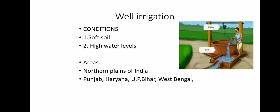Well irrigation — the conditions where well irrigation can be practiced are: soft soil so that digging can be done easily, and a high water table so that water can be easily taken out. The areas where well irrigation has been practiced are the northern plains of India — Punjab, Haryana, Uttar Pradesh, Bihar, and West Bengal.